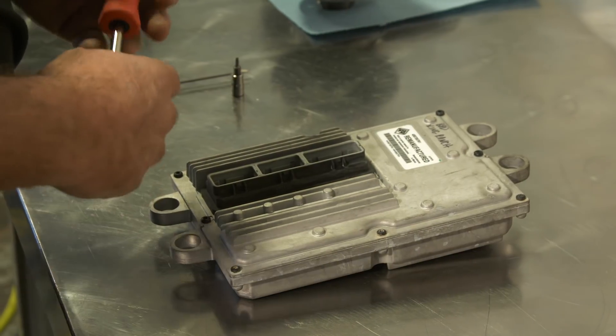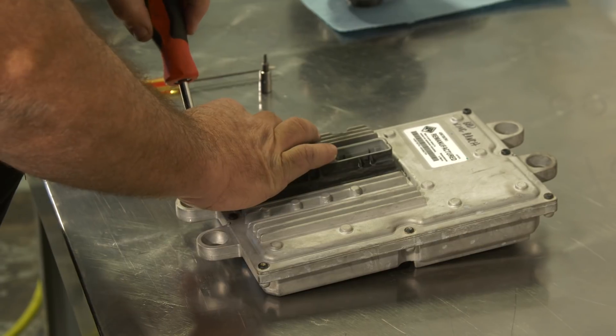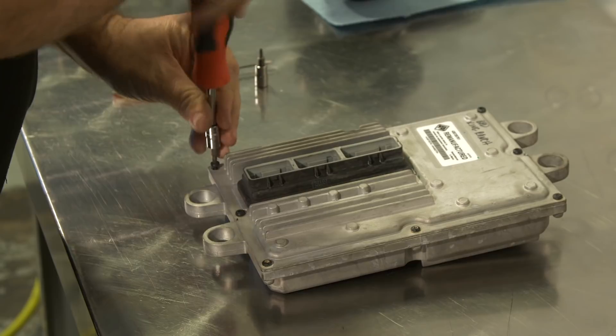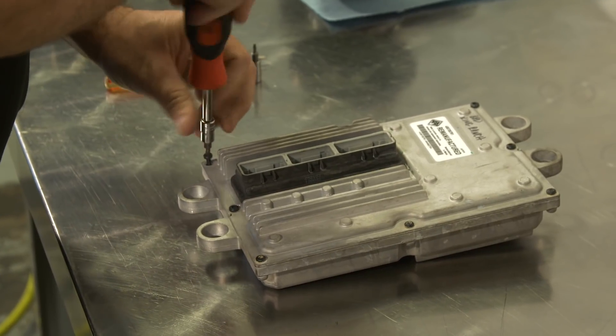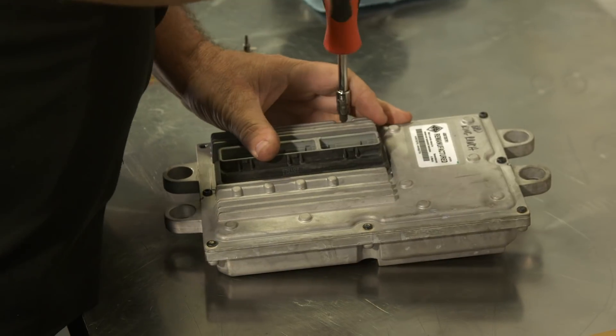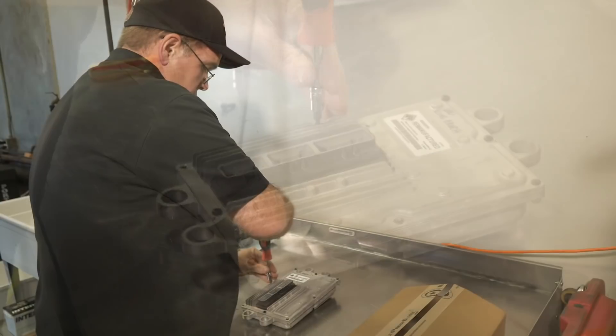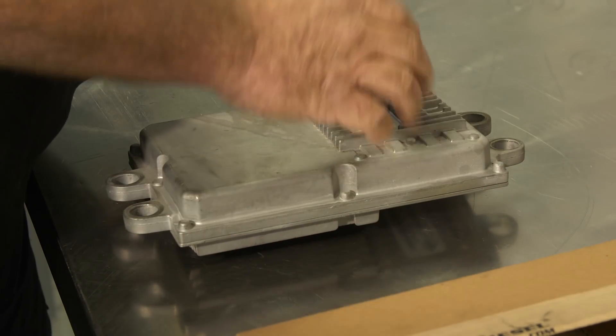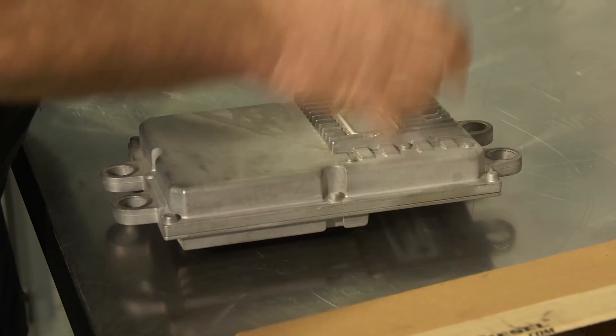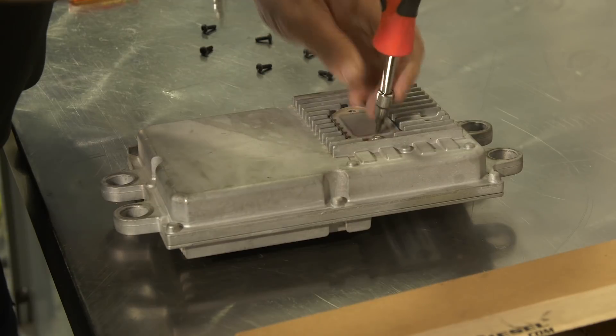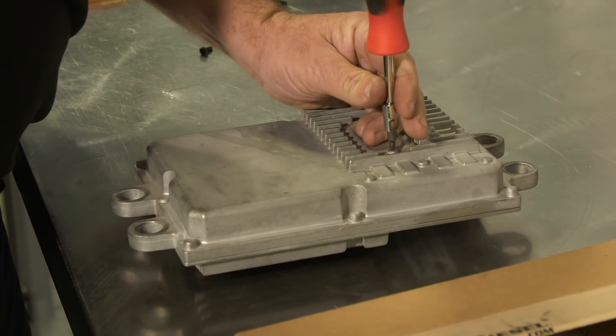All right, so we're going to install a power supply from Bulletproof Diesel on this FICM. So we remove the 8 screws on the body of the FICM. Also a T20 Torx. When all the screws are out of the body, just flip it over and remove the two Torx T20s off the cover.